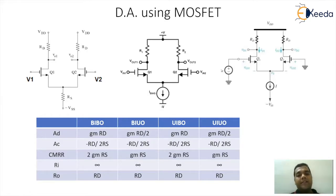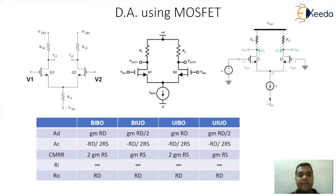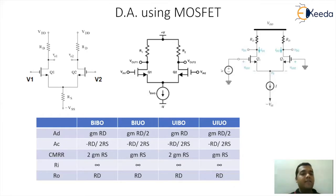For unbalanced input balanced output configuration: AD = gm·RD / 2, CMRR = 2·gm·RS, RI = infinity, RO = RD. For unbalanced input unbalanced output configuration: AD = gm·RD / 2, AC = −RD / (2RS), CMRR = gm·RS, input resistance = infinity, output resistance = RD.